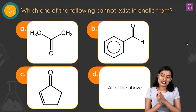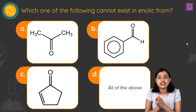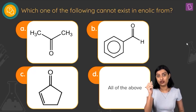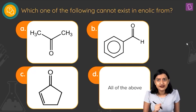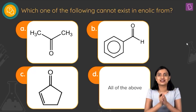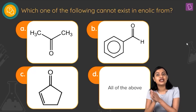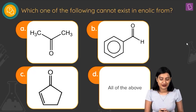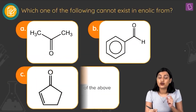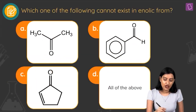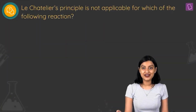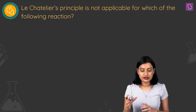You might be confused thinking the hydrogen on the carbonyl carbon itself counts, but that is the aldehydic hydrogen — not an alpha hydrogen on the adjacent carbon. Therefore, option B (benzaldehyde) cannot exist in enolic form, and option B is the correct answer.